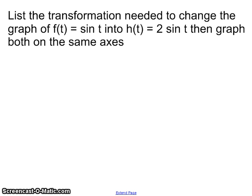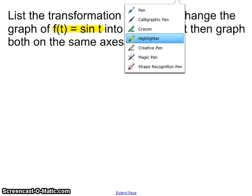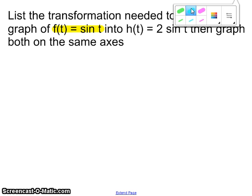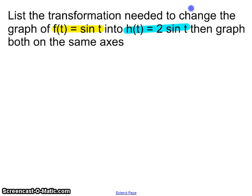Alright, here we have the graph of sine of t. And we're transforming that into the graph of, hold on, do I have another color here? No. Color? Pink. There we go. Two times the sine of t. And the list on the previous page told you what all the different things that a can do.